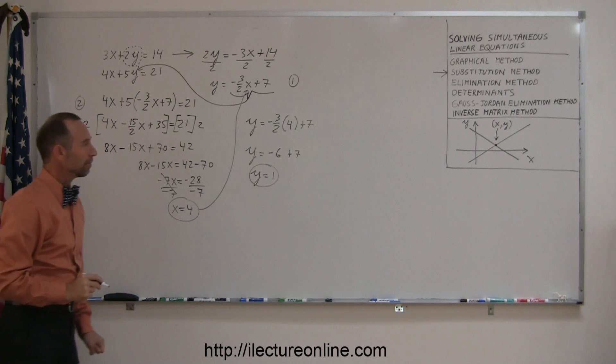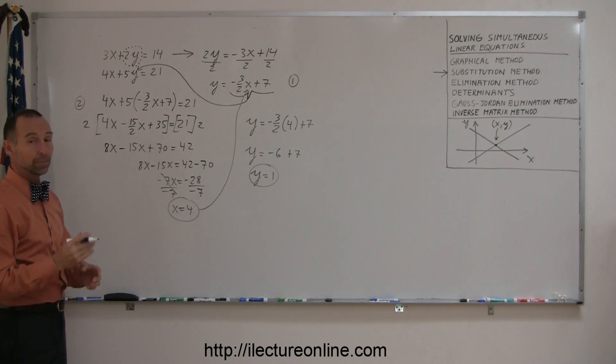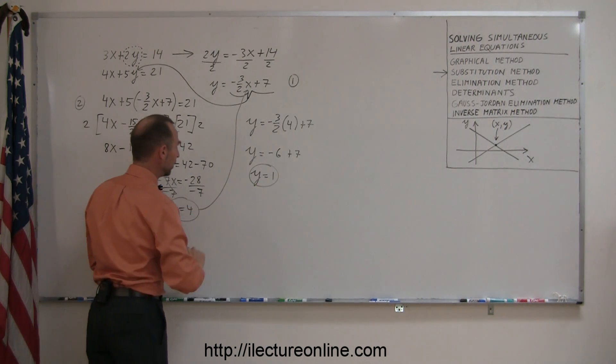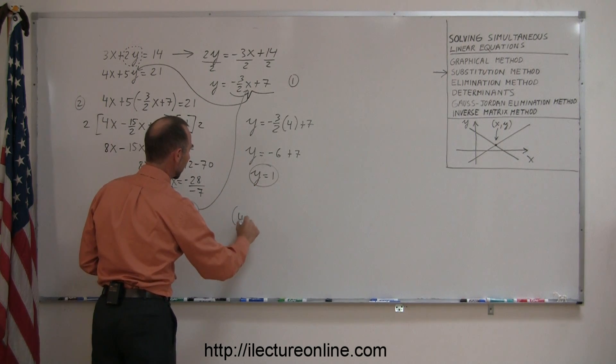So that means that the point, or the place where the two lines cross, have an x-coordinate of 4 and a y-coordinate of 1, so the solution would be 4 comma 1.